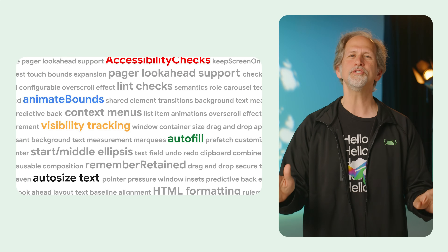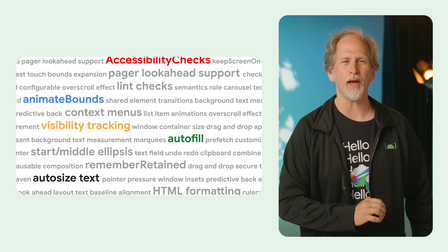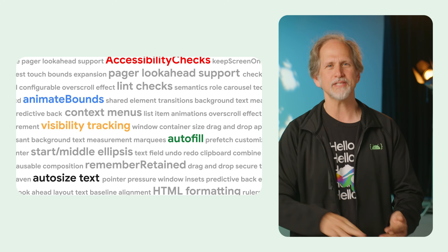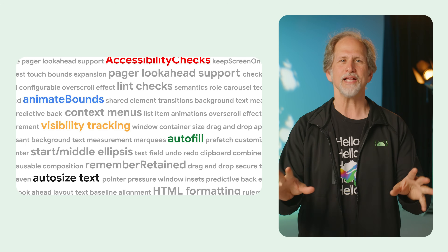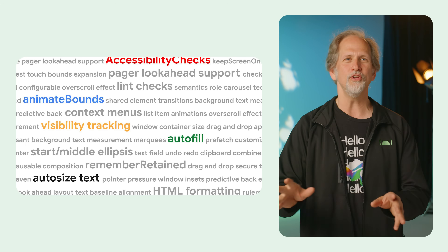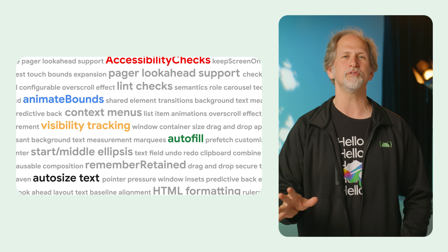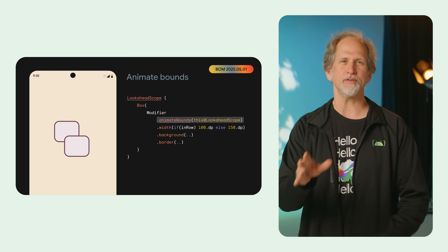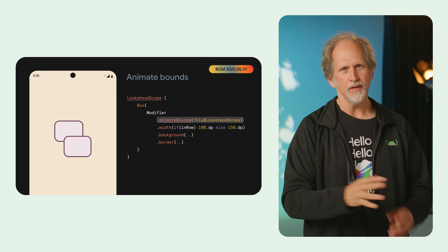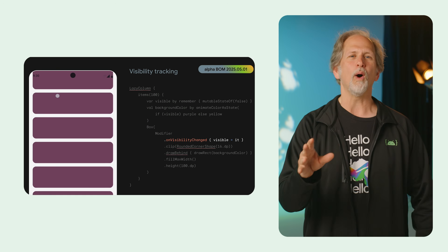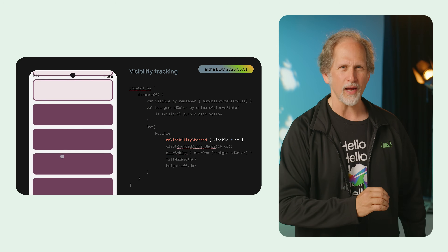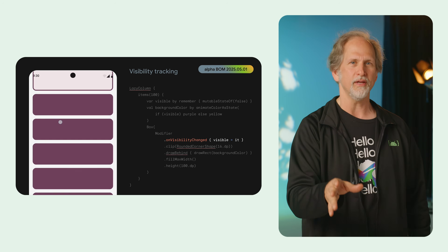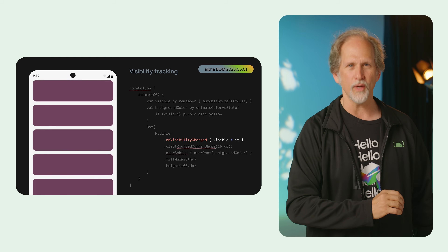This year brings a host of new Jetpack Compose features, including autofill support, autosizing text, visibility tracking, accessibility checks in tests, and a new Animate Bounds modifier. Animate Bounds provides automatic animations of a composable's position and size within a look-ahead scope, while visibility tracking is used when you need high-performance information on a composable's position in its root container, screen, or window.